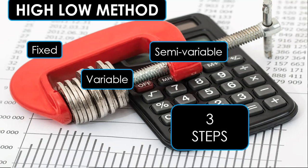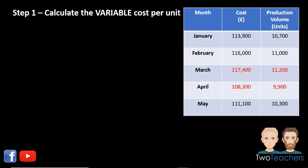We look to calculate these separate elements in three steps. The first step is to calculate the variable cost per unit. We do this by first looking at the table of data on the right of your screen, finding the highest and lowest costs and their associated units.